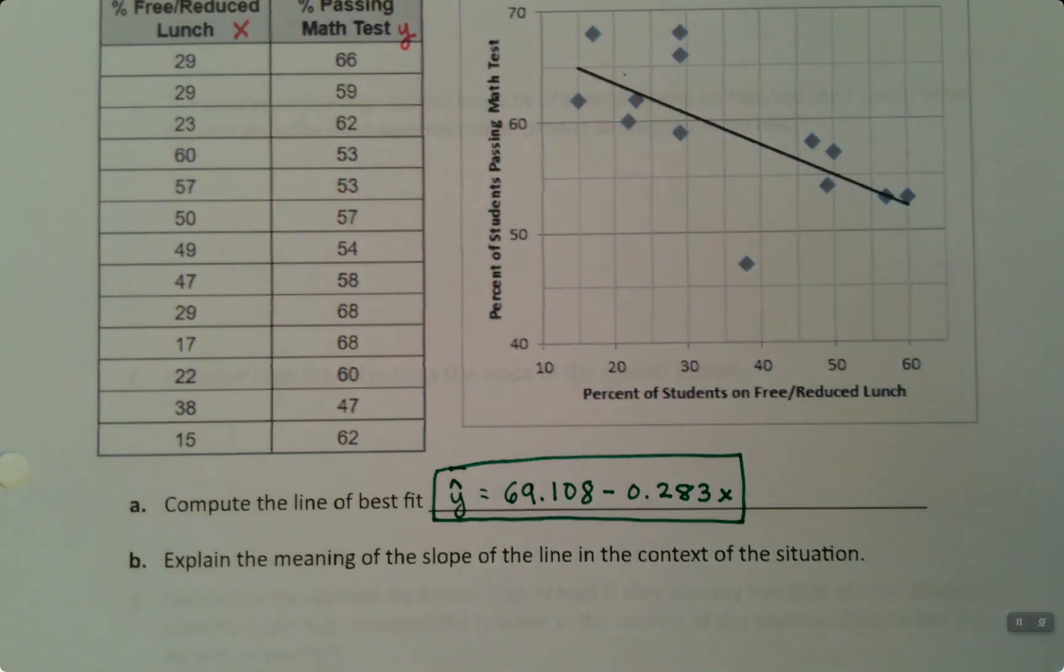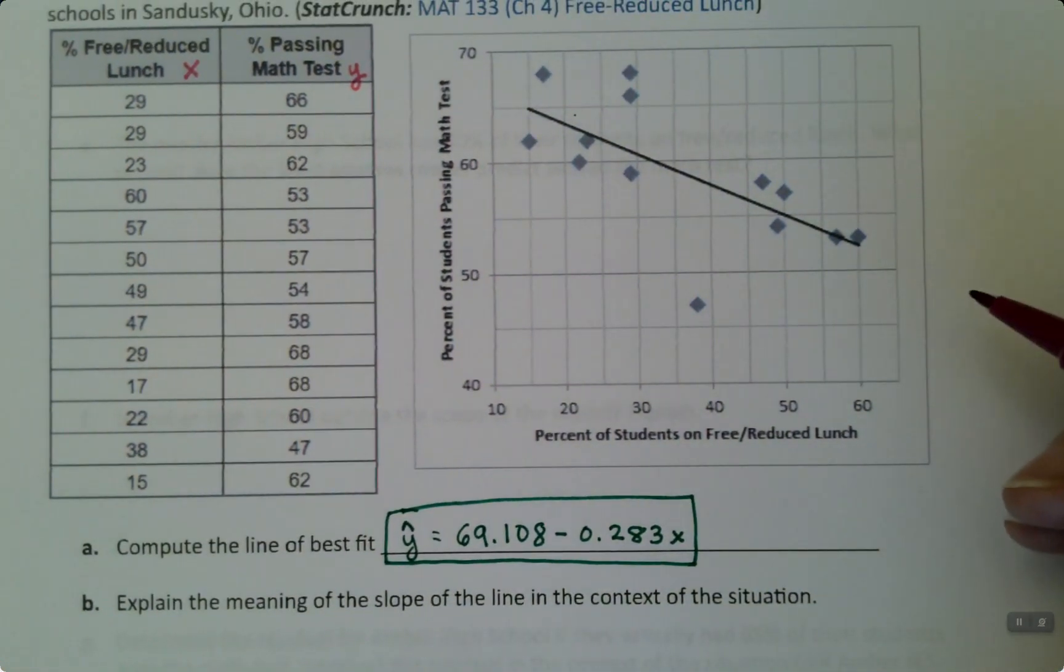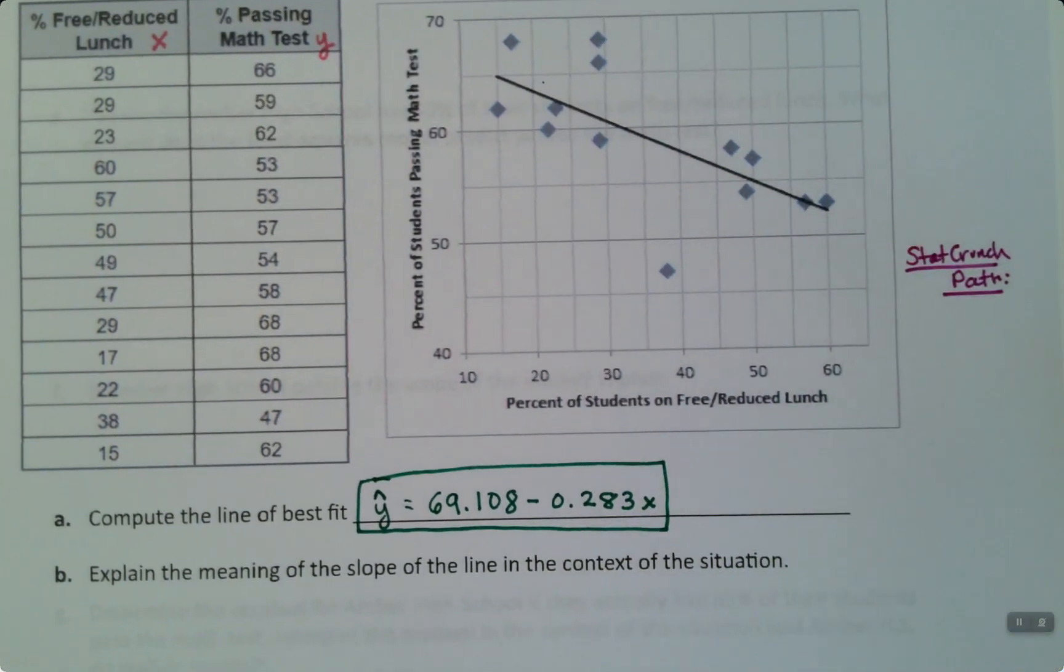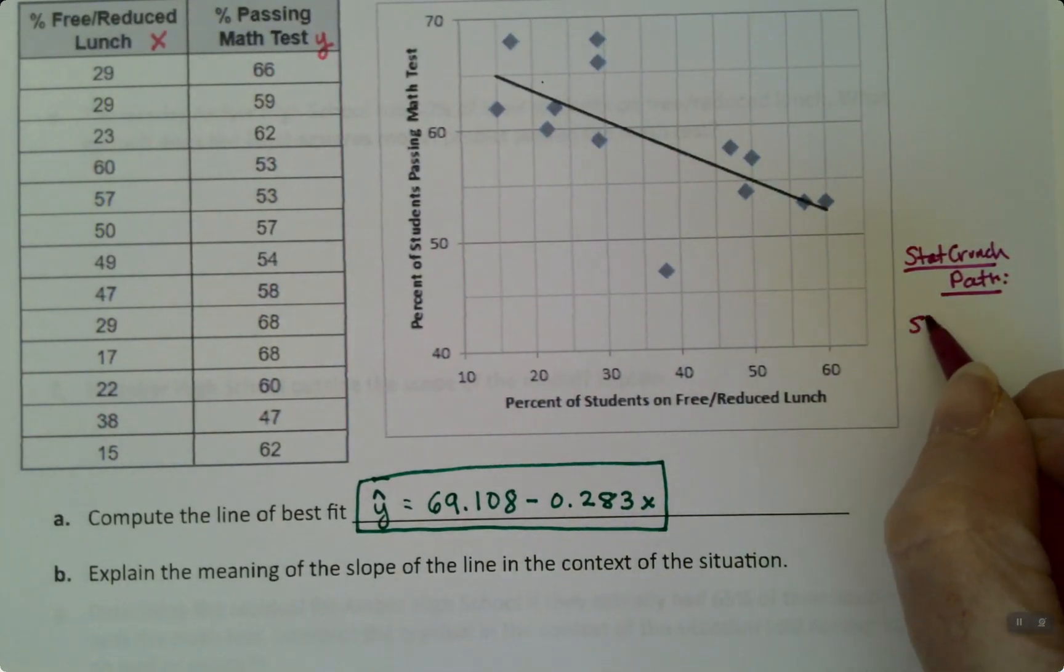Let me write our StatCrunch path. I'm going to write it up here just so I have a little bit of space to move here. So StatCrunch path. Obviously you enter the data first, but then you go to stat, regression, and then simple linear.